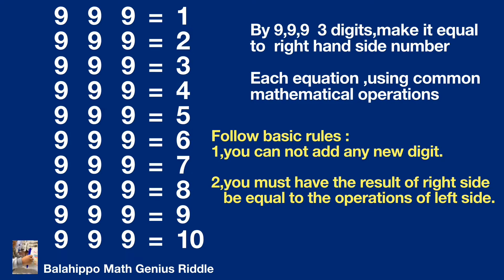Square is not accepted due to adding two in the equations. Second, you must have the result of the right-hand side equal to the operations of the left-hand side.